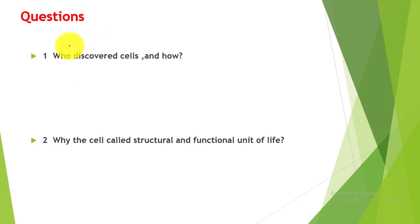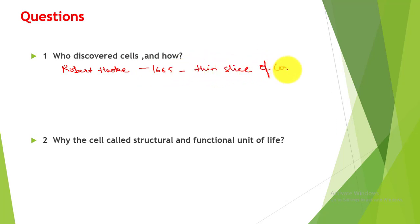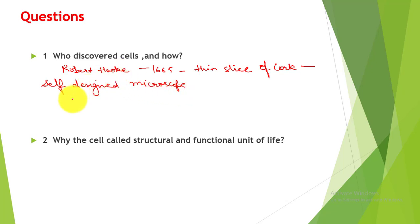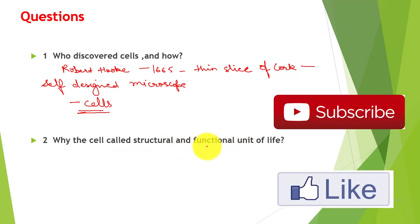Let us answer a few review questions. First: who discovered the cell? Robert Hooke discovered the cell in 1665. He observed a thin slice of cork under his self-designed microscope. Under the microscope, he saw small compartments — little rooms — and from the Latin word for little room, he named these structures 'cells'.